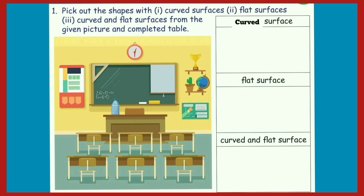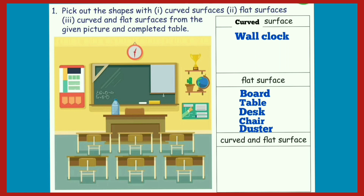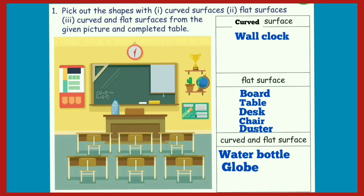Children, observe the picture. It is a classroom. First, curved surface - the wall clock is in curved shape. Next, flat surface - the board, table, desk, chair, duster, etc. are in straight lines. Next, curved and flat surfaces - water bottle, globe, chalk box, etc.